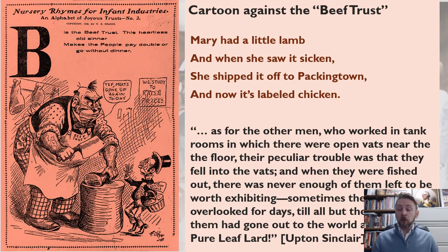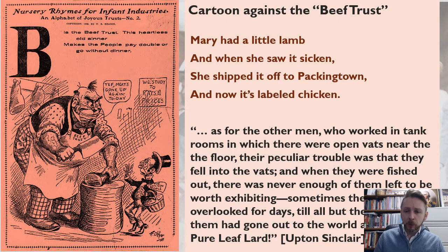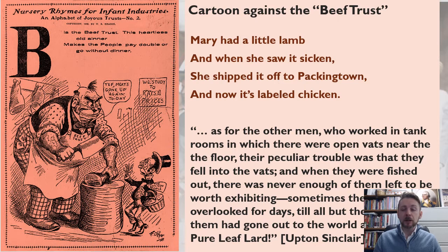In Upton Sinclair's Jungle, passages such as this one led Americans to collectively throw up at the thought of what they were putting into their bodies: 'As for the other men who worked in the tank rooms in which there were open vats near the floor, their peculiar trouble was that they fell into the vats, and when they were fished out there was never enough of them left to be worth exhibiting. Sometimes they would be overlooked for days till all but the bones of them had gone out into the world as Durham's pure leaf lard.'